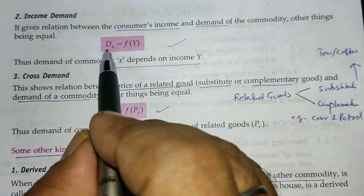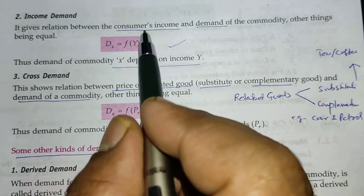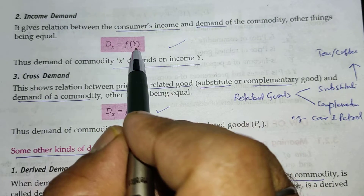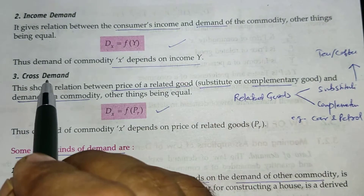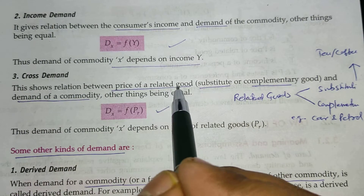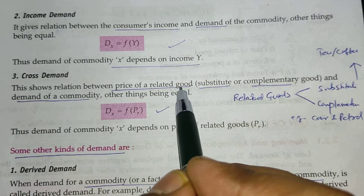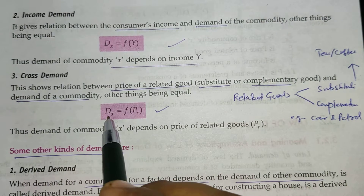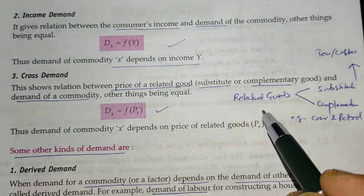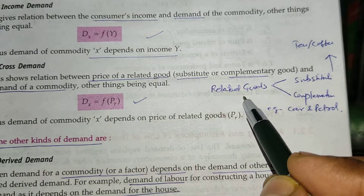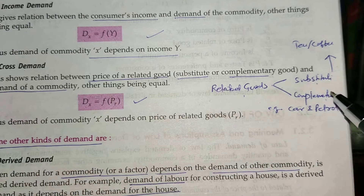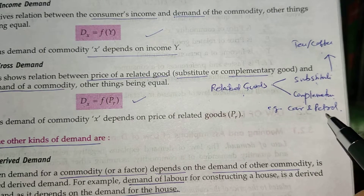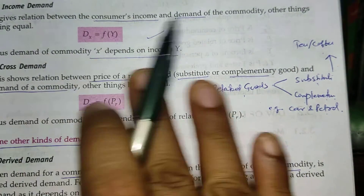Income demand depends on the income of the consumer. Cross demand depends on the price of related goods. Related goods are of two types: substitute goods and complementary goods — for example, tea and coffee (substitutes), and car and petrol (complementary goods).